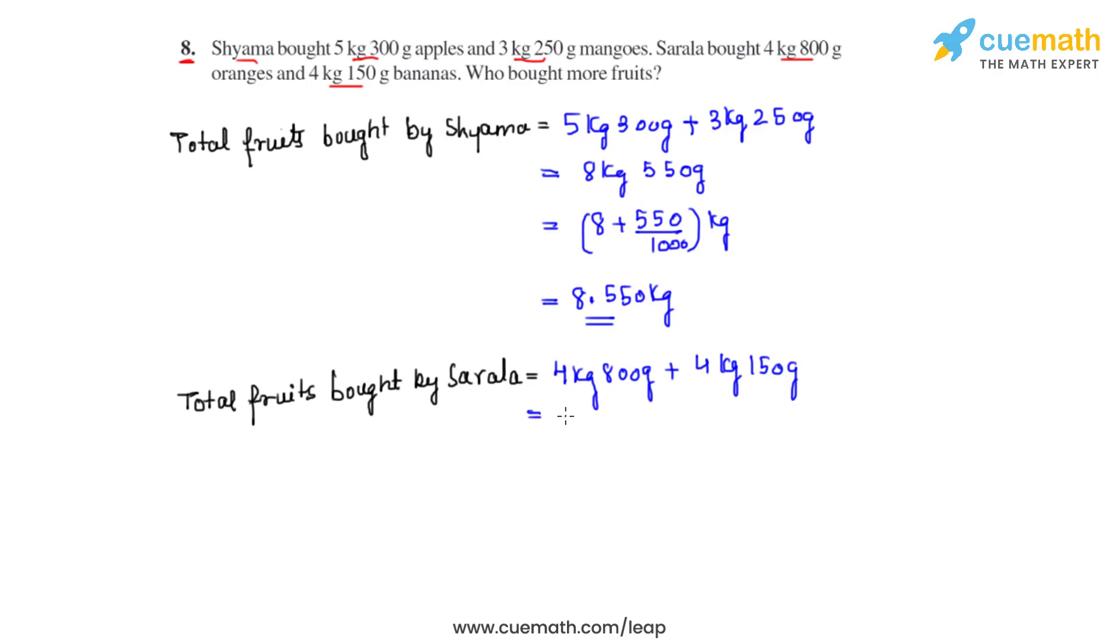We can directly add the kilograms: 4kg plus 4kg gives us 8kg. 800 grams plus 150 grams gives us 950 grams. We'll convert 950 grams into kilograms by dividing it by 1000.